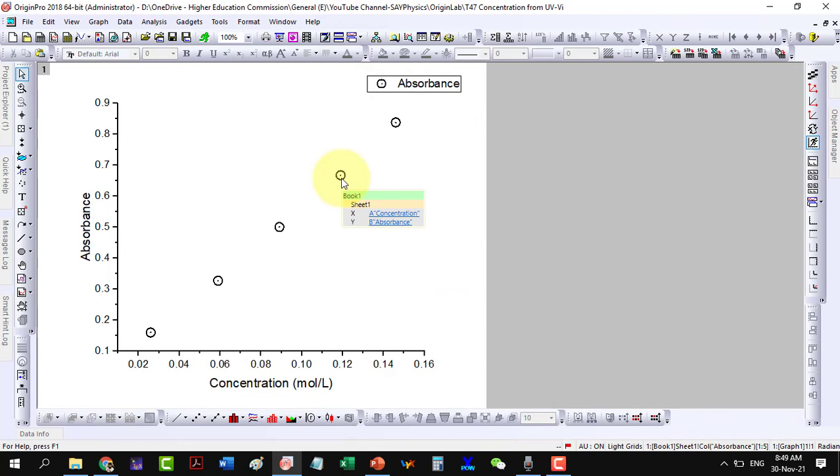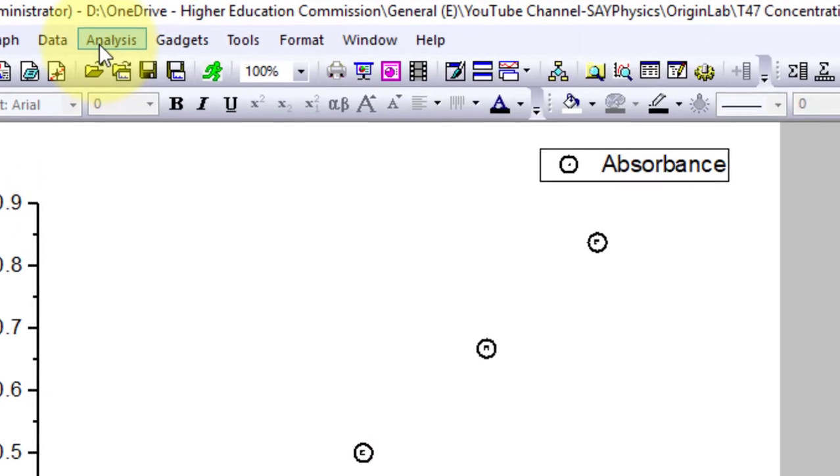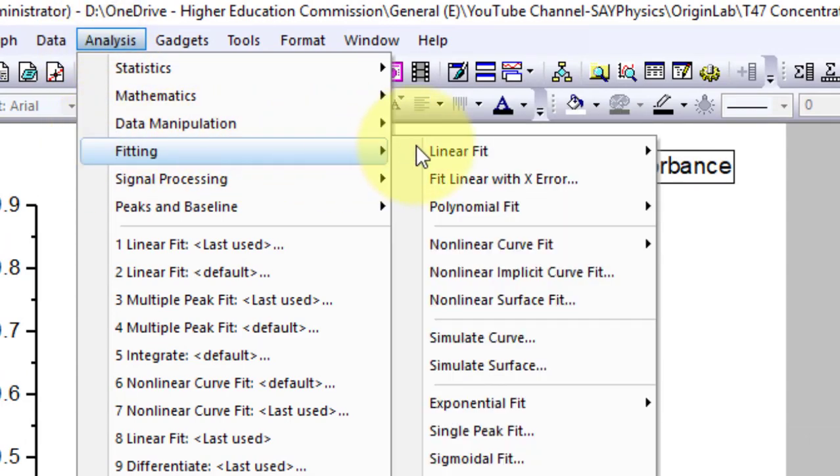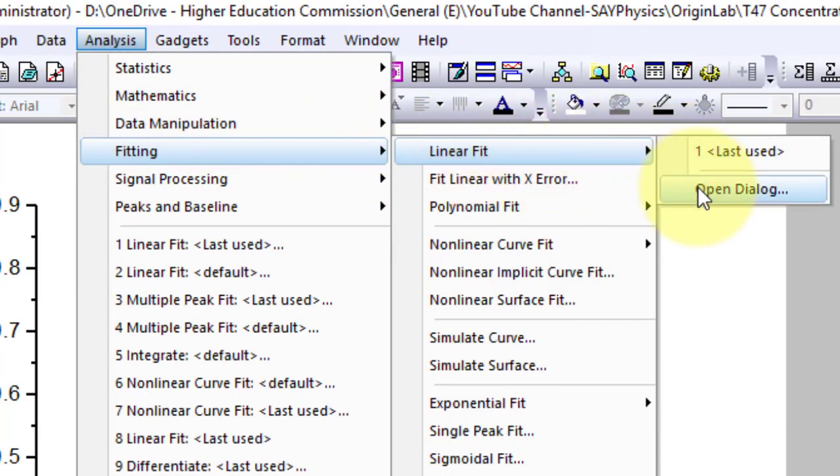Now, we will linearly fit this data to get the required parameters. To do this, select the data points, go to analysis, fitting, linear fit and open the dialog.